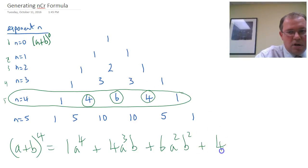Next coefficient 4, decrease the a by 1 power and increase the b by 1 power, and finally 1 times b to the 4.